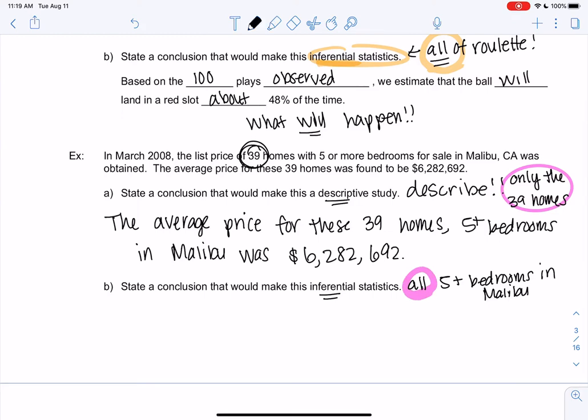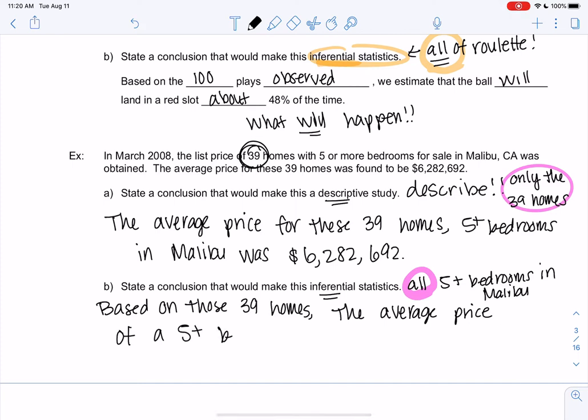So the difference here is based on those 39 homes, the average price of a five-plus bedroom in Malibu, right?